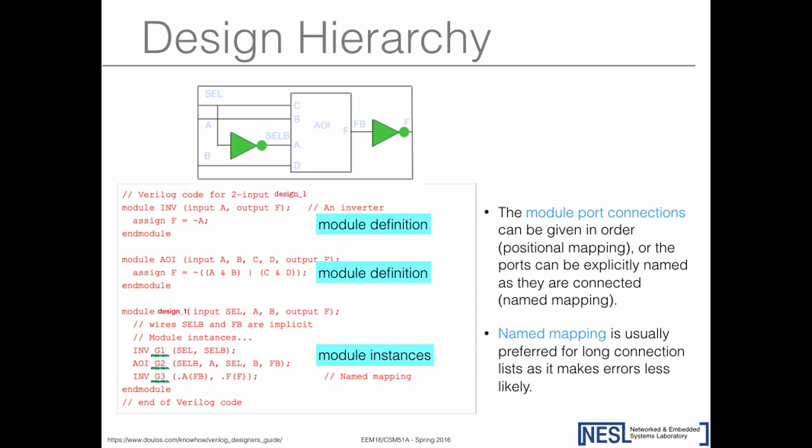There are different ways to connect modules. One is called position mapping, the other named mapping. In position mapping, you look at the order of ports in the module definition—input A, B, C, D, output F—and at each position you put the wire you want to connect to that port. For example, at the position of A, you write the wire that connects to input A in the top design.